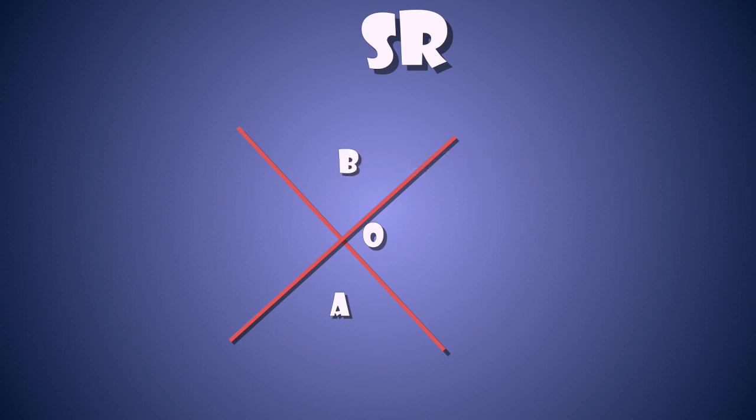The region B represents the future. Event O can influence any event in this region for the reason given above. The region C is defined as elsewhere, because one can't reach any event from event O without reaching the speed of light.